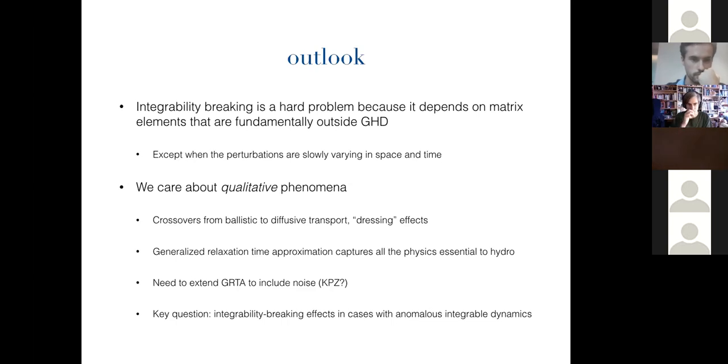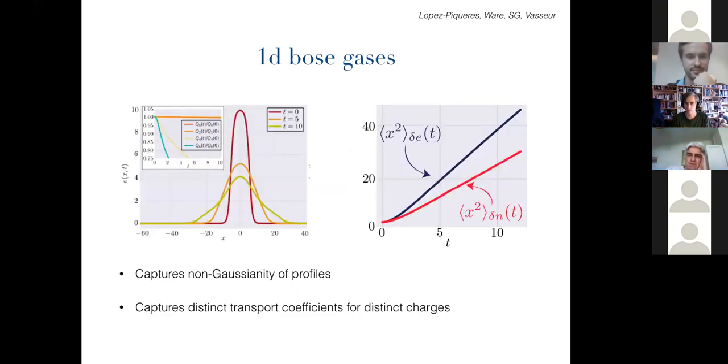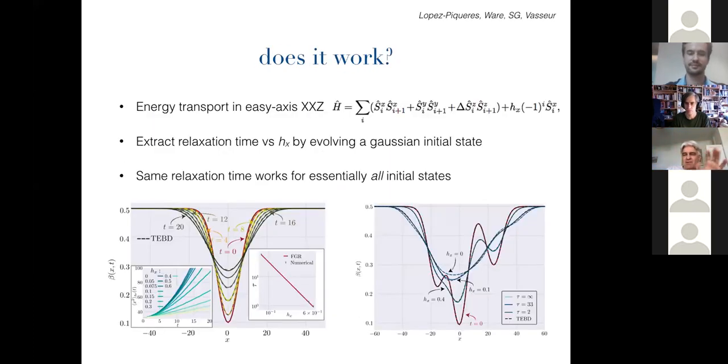Yeah. So if I understood you correctly, in the examples, you looked at this relaxation time approximation worked at short times. It worked to the times that we're able to access, right? I mean, what I find kind of easy to believe in a sense that at late times, it would be good, but at short times, why does it work at short times?